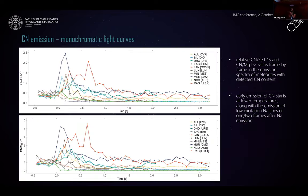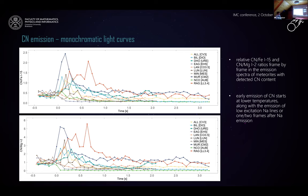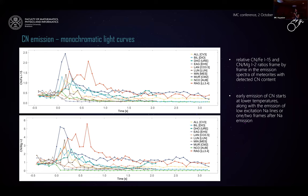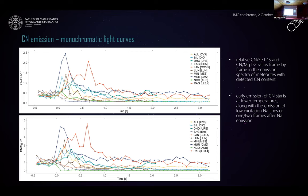In this slide, you can see monochromatic light curves, plotting relative spectral intensity ratios measured relative to iron and magnesium lines, frame by frame, for each emission spectrum of meteorites with detected CN content. Time evolution of CN emission is on the x-axis and the intensity line ratio on the y-axis. Five frames before ablation started are also shown. You can see that early emission of CN starts at lower temperatures, along with emission of low-excitation sodium lines, for one or two frames after sodium emission.